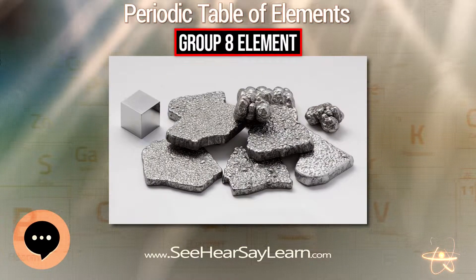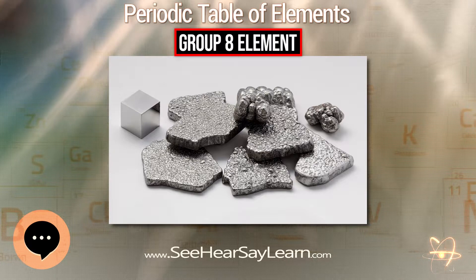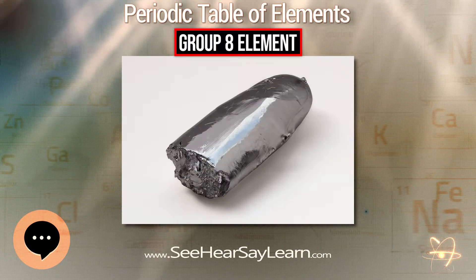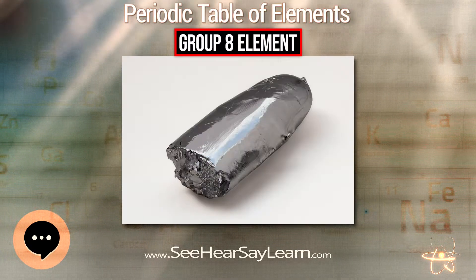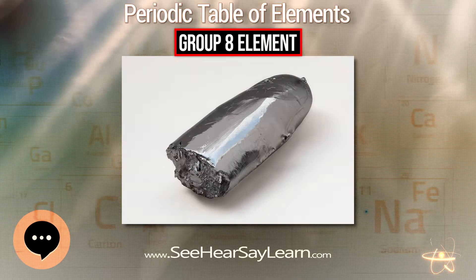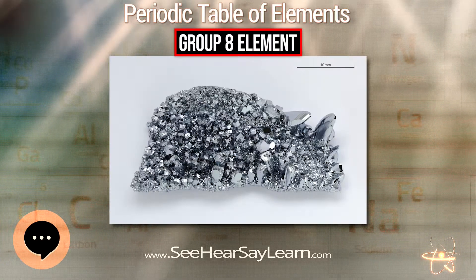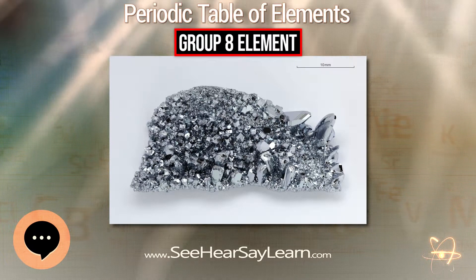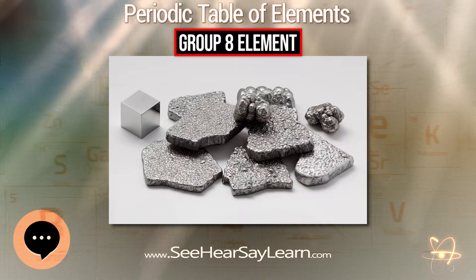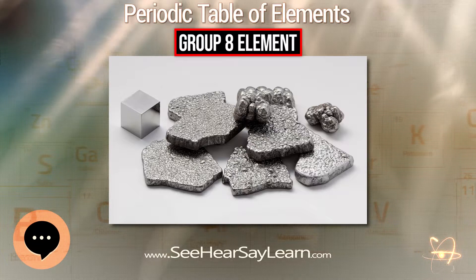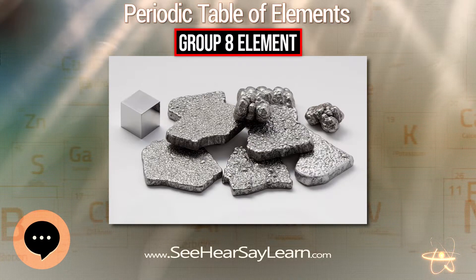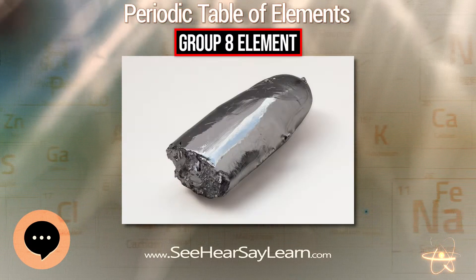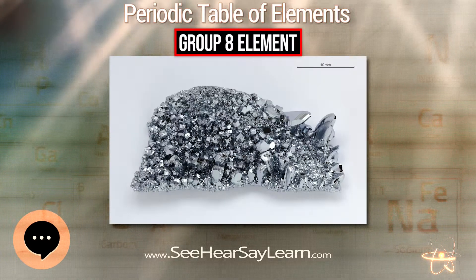Group 8 is a group of chemical elements in the periodic table. It consists of iron, ruthenium, osmium, and hassium. They are all transition metals. Like other groups, the members of this family show patterns in electron configuration, especially in the outermost shells, resulting in trends in chemical behavior.